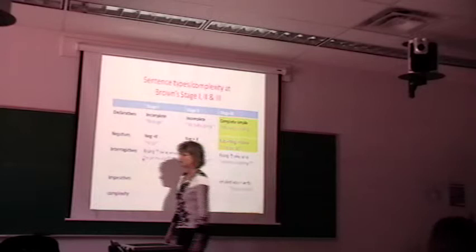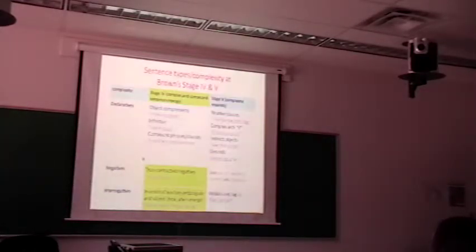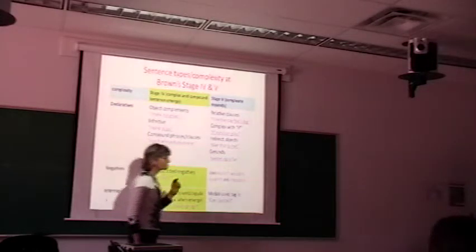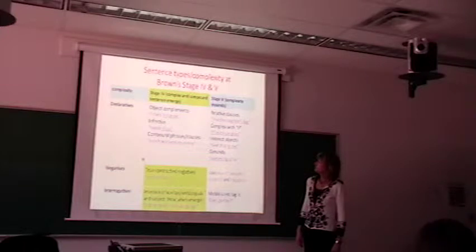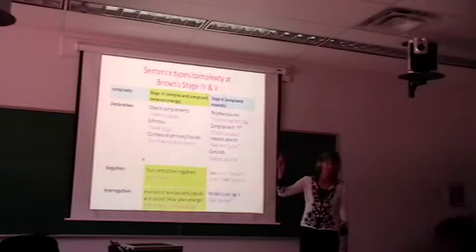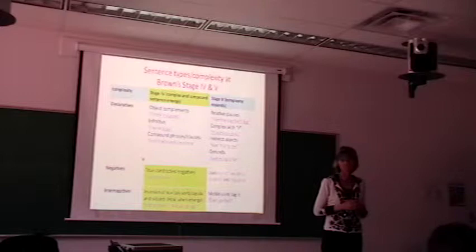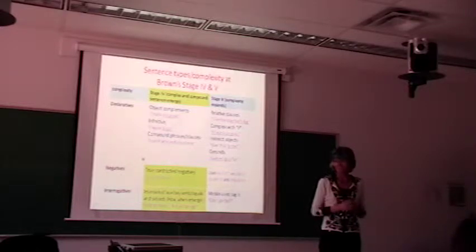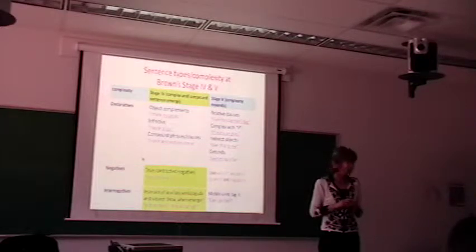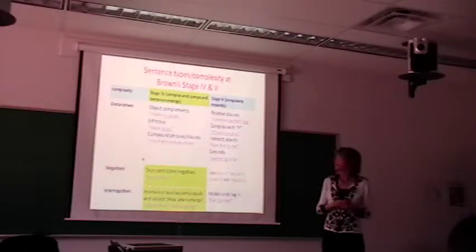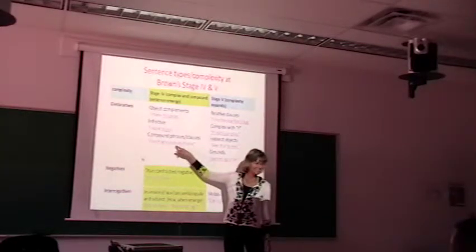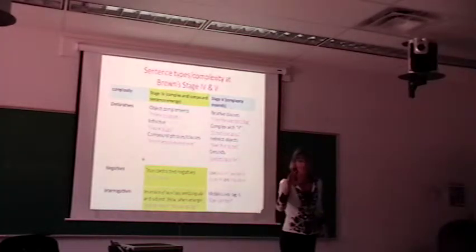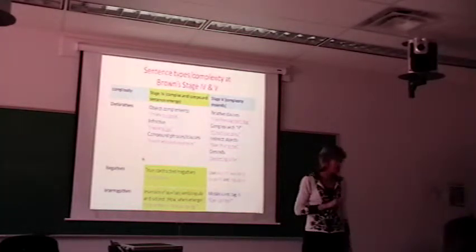I'm going to continue before I go to negative and show you the next two stages. Here we are at stage 4 with declarative. If we look at stage 4, compound and complex structures emerge. If you find a sentence with a compound or a complex structure, it's stage 4. The only compound structures are and. Child starts conjoining clauses or phrases with and.